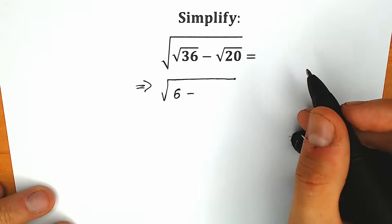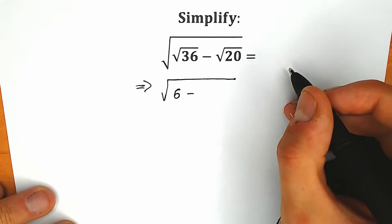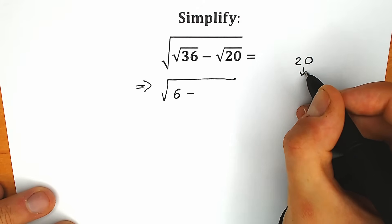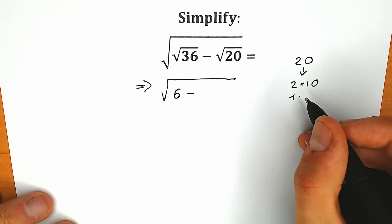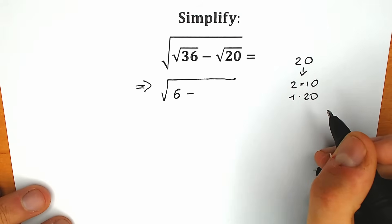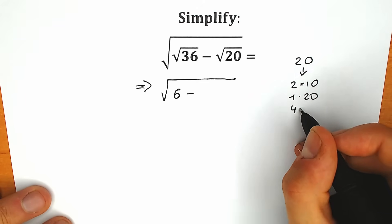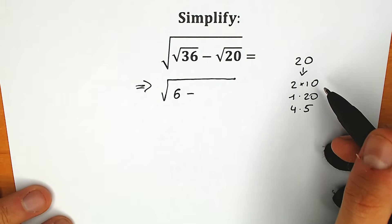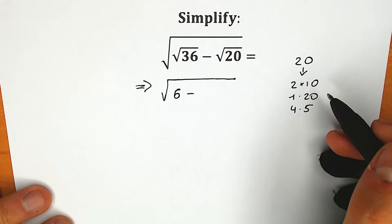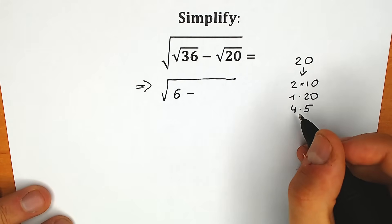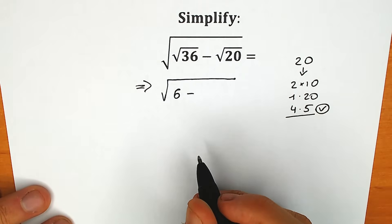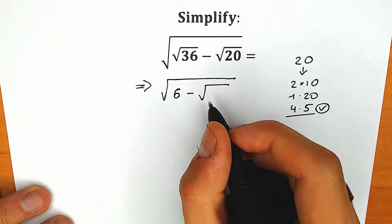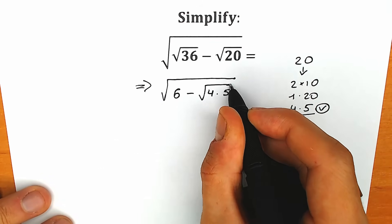How can we express 20? There are a lot of ways: 2 times 10, 1 times 20, or 4 times 5. But which one is the best for us? We can't easily find the square root of 2, 10, or 1 and 20, but square root of 4 we can easily find. So let's use 4 times 5. We write minus square root of 4 times 5.